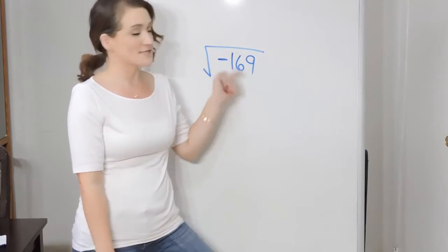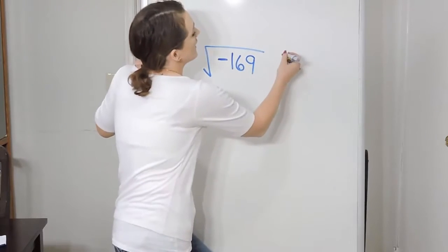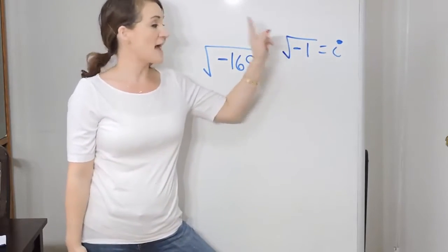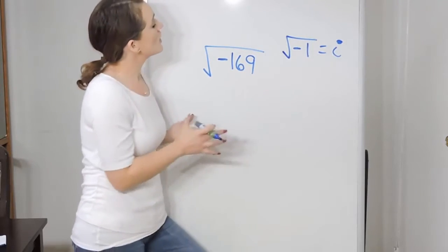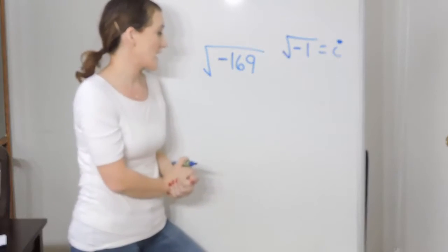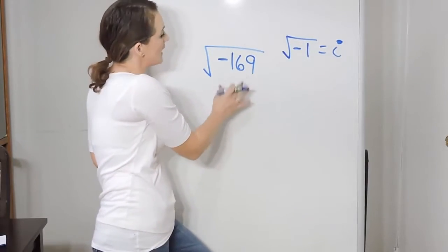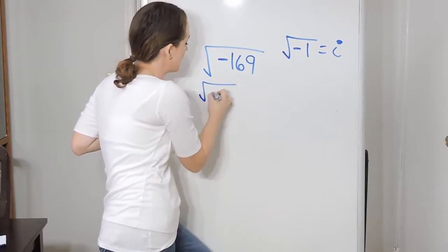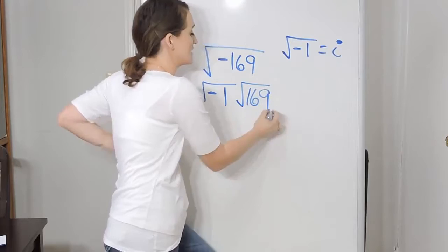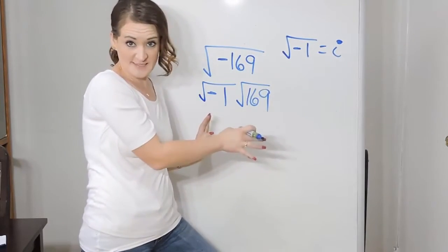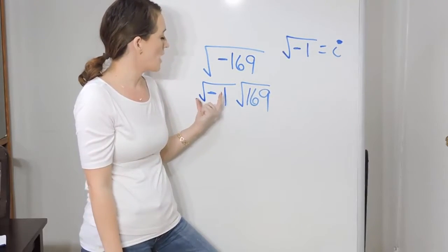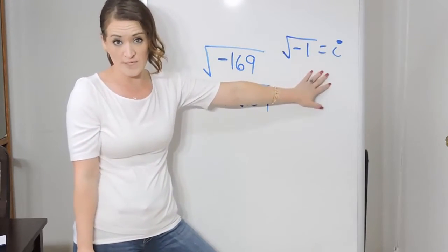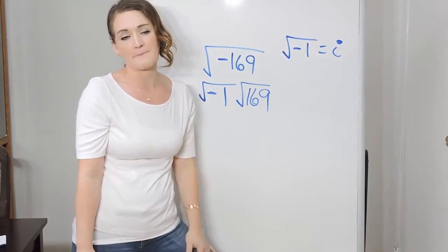You're dealing with a complex number when you are taking the square root of something that is negative. One of the important rules we want to understand is that the square root of negative one is equal to i. So what we do is we use the product rule to separate the problem — essentially pulling out the negative piece from it. I'm going to say that negative 169 is the same thing as negative one times 169. The product rule says that I can split this up, so I can take the square root of negative one, which is i. That's just a rule you need to know.